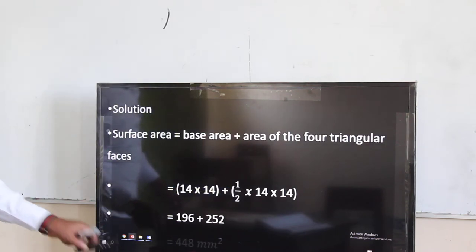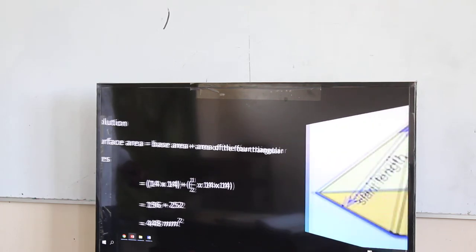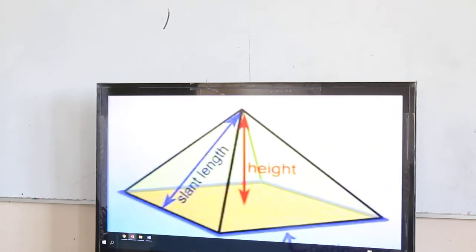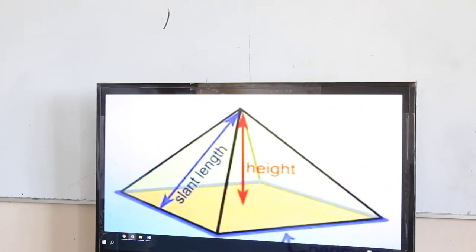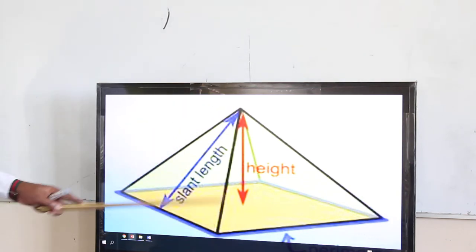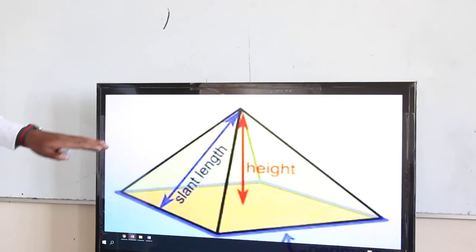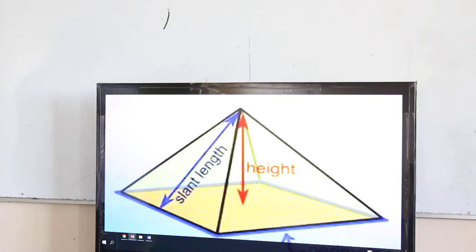As we continue, let me give you another picture for that. We have the slanting length — from here to here — then you have the height. That is our picture of a pyramid. So it is the area of the base, plus the area of the sum of the slanting faces that are making it.